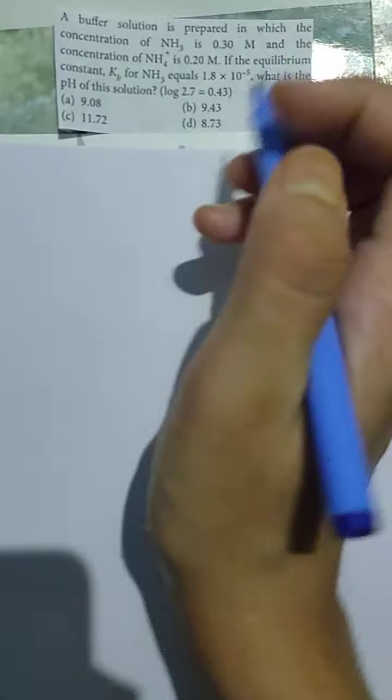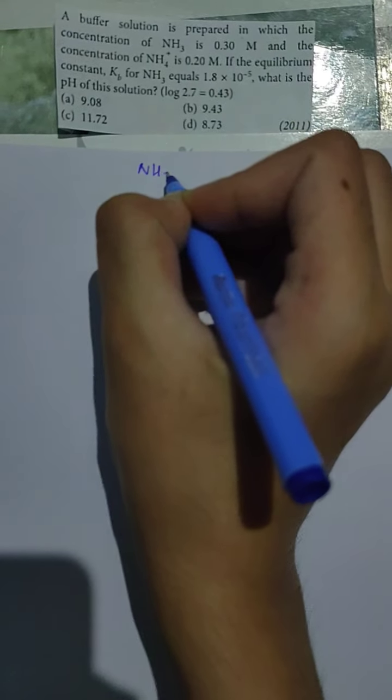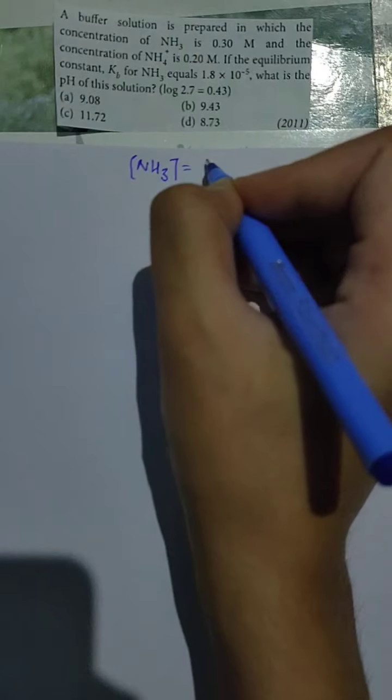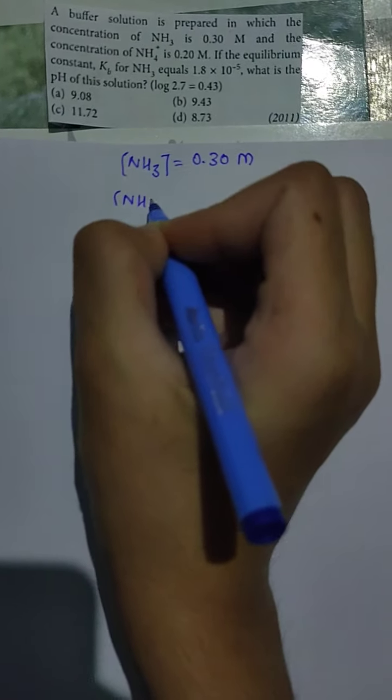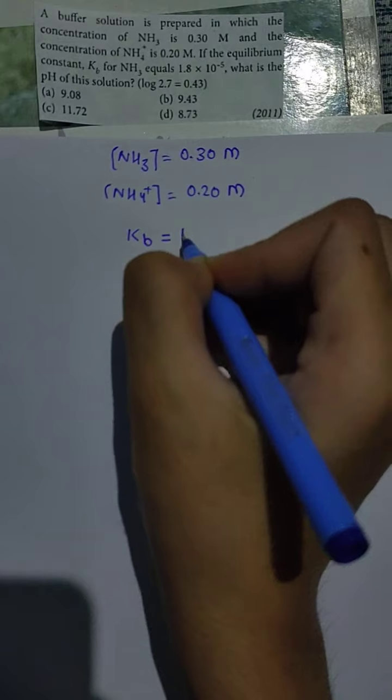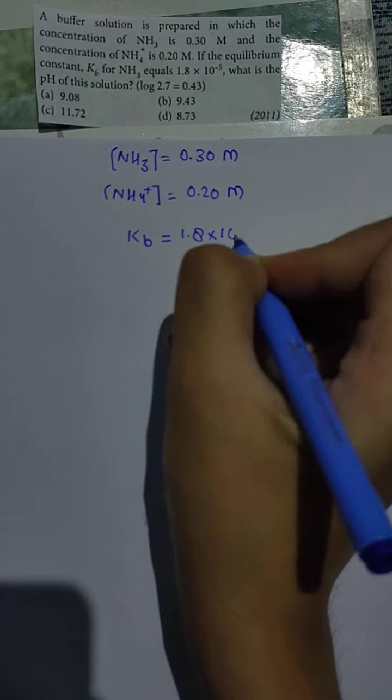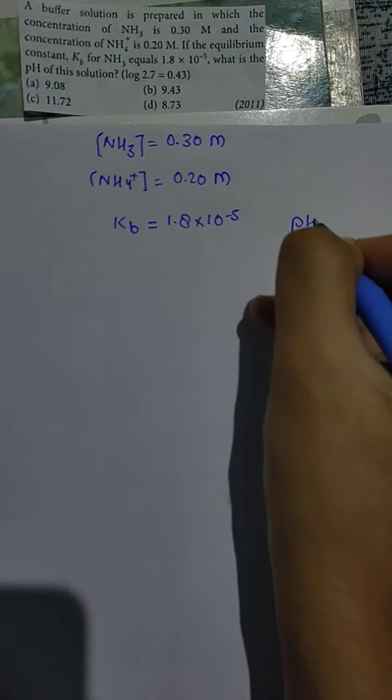A buffer solution is prepared in which the concentration of NH3 is 0.30 molar and the concentration of NH4+ is 0.20 molar. If the equilibrium constant Kb for NH3 equals 1.8 × 10^-5, what is the pH of this solution?